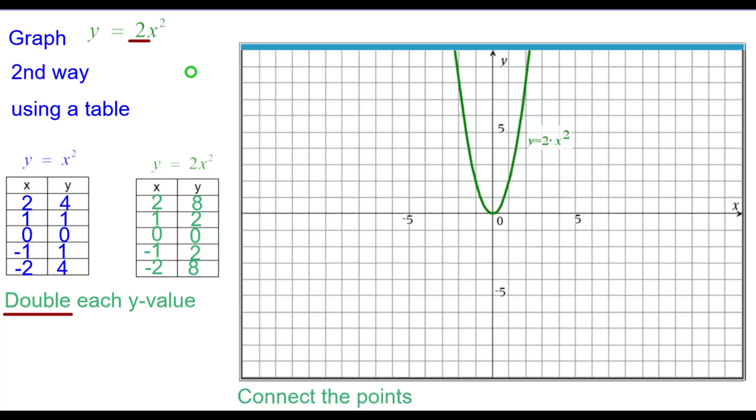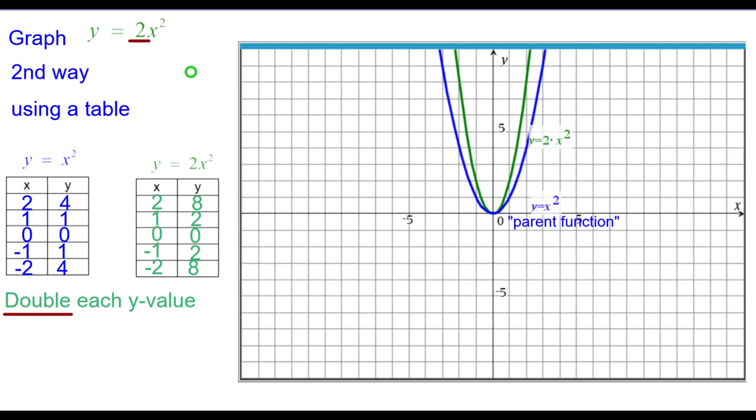Connecting the points and we get the parabola. And comparing it to the parent function again we can see that it is narrower and it goes up faster.